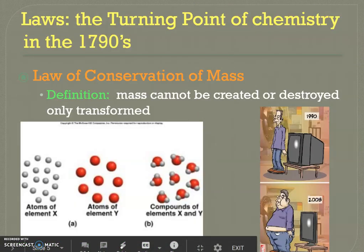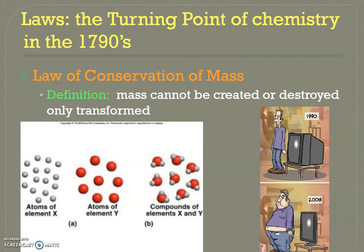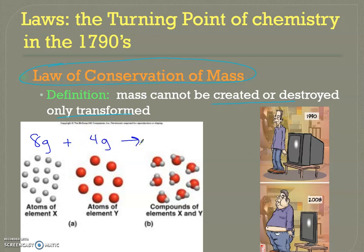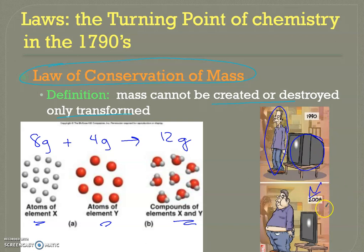How did all of this change in the 1700s? It changed due to the Law of Conservation of Mass, which we've already gone over — mass cannot be created or destroyed, only transformed. This showed there was a kind of bookkeeping: if you had 8 grams of element X and 4 grams of element Y, when you reacted them you got 12 grams of product, and you could track all of it.